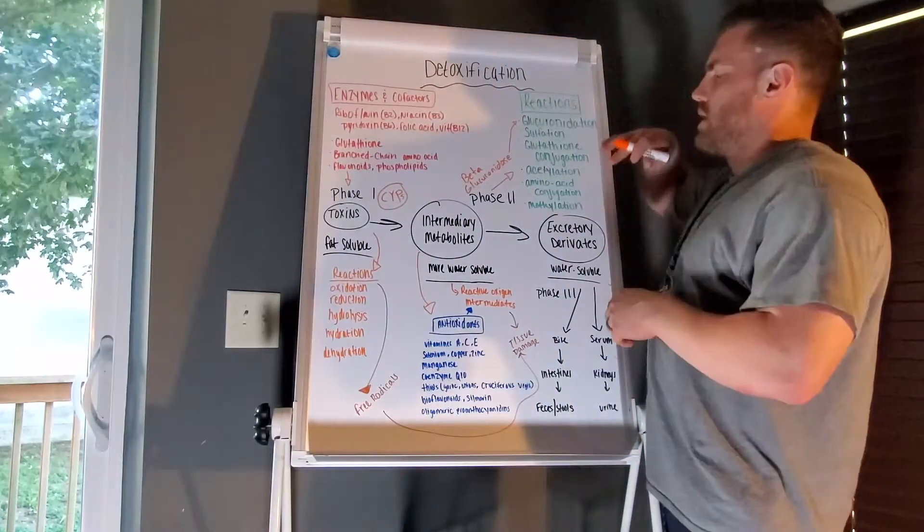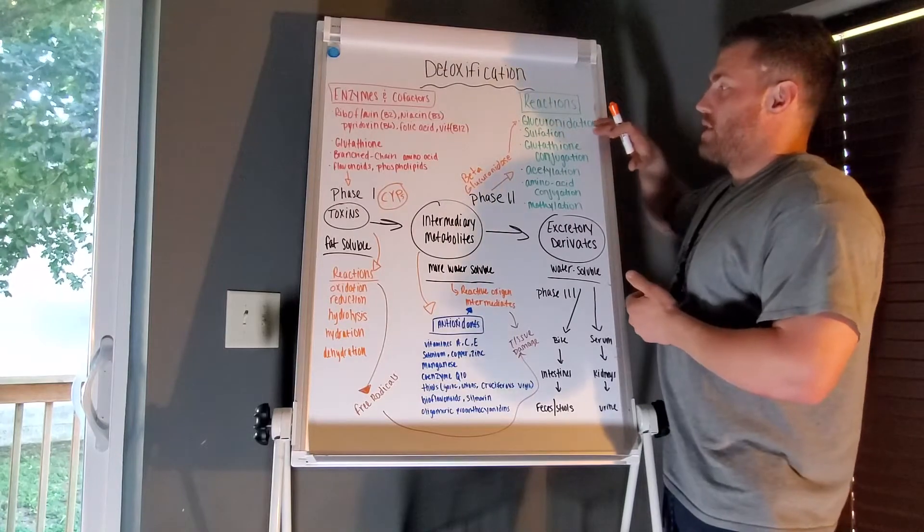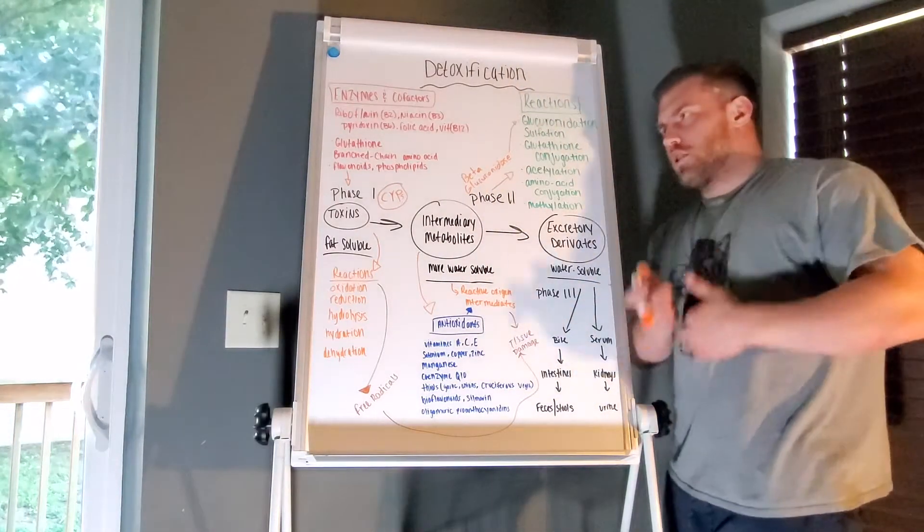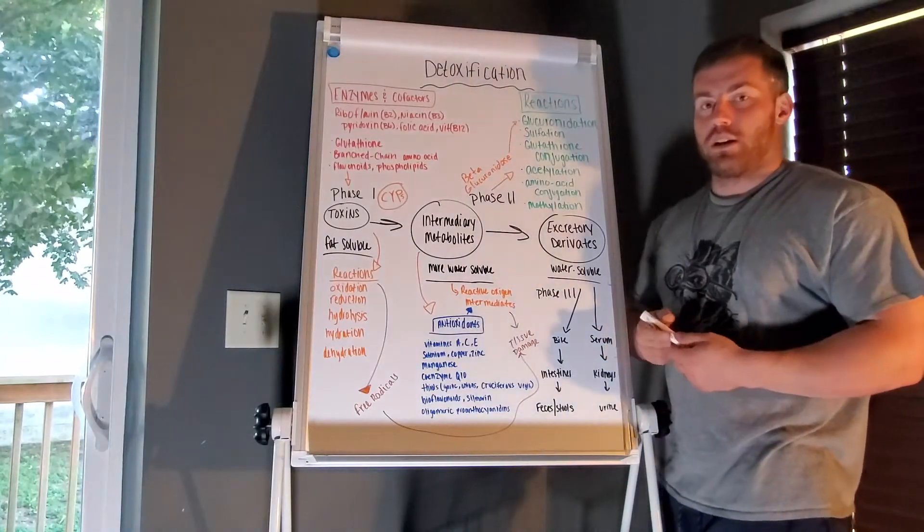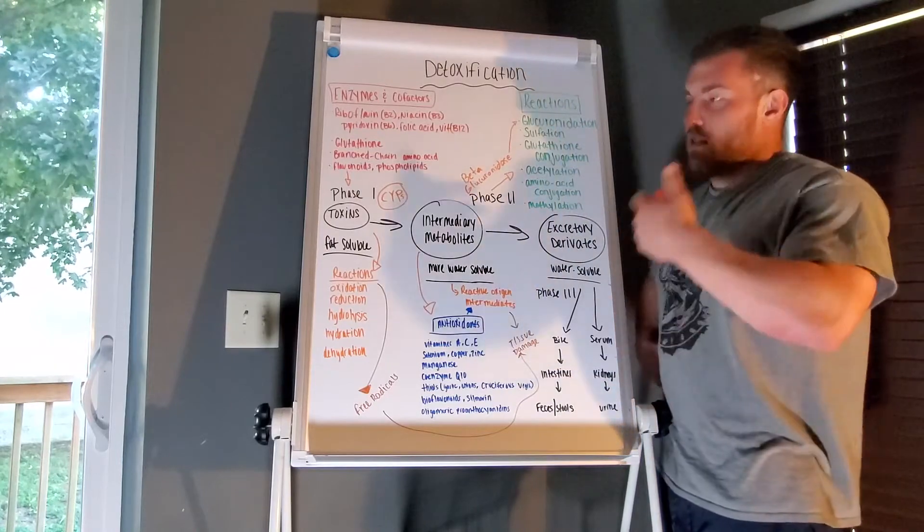So really what's happening is this beta-glucuronidase is actually reversing some of the activity from this process, and it's essentially returning these toxins back into their toxic form or their previous form, and they're being recirculated.